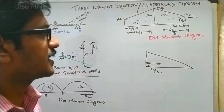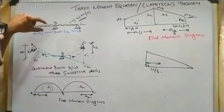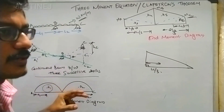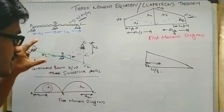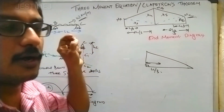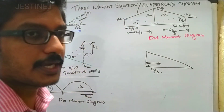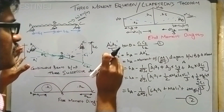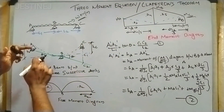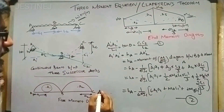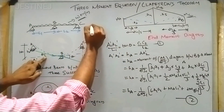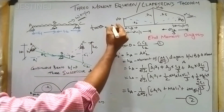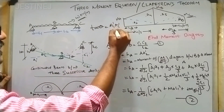So we have: the UDL acting on the continuous beam causing settlement, the free moment diagram, and the end moment diagram. Now moving to the derivation. For the AB portion, the tan theta value is equal to A1'A2' divided by L1. Similarly for the BC span, it is C1C2 divided by L2.